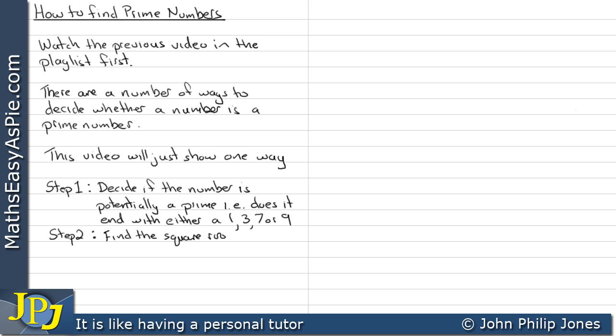Step 2. Find the square root of the number if the number is potentially prime as found out by step 1.